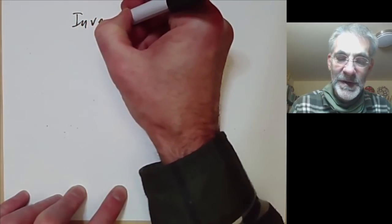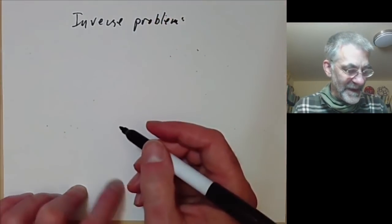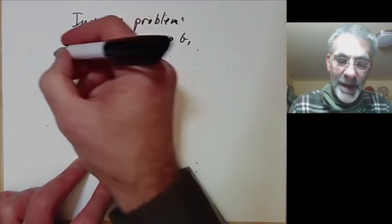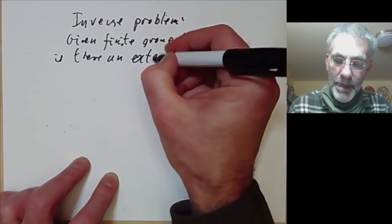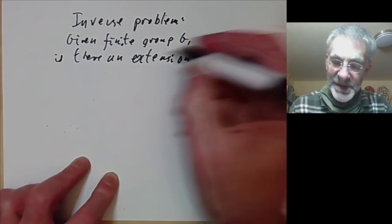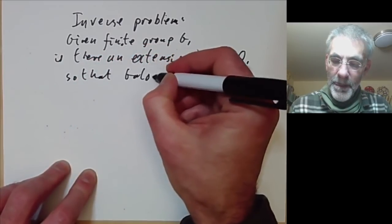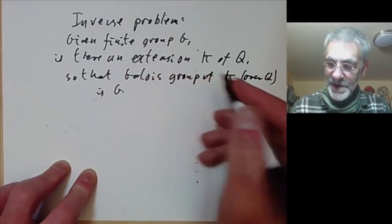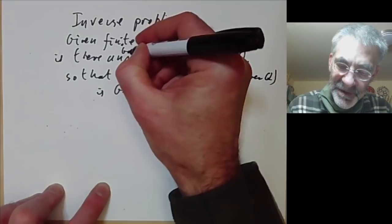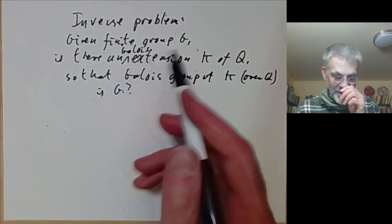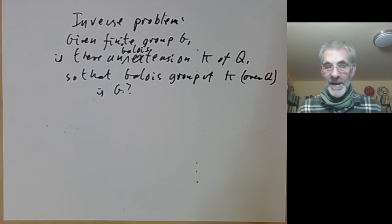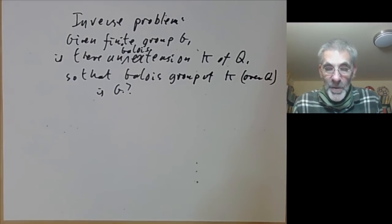I'll just finish by mentioning an old classical problem in Galois theory that still hasn't yet been solved. This is the so-called inverse problem. It's very easy to state. Given a finite group G, is there an extension k of the rational numbers so that the Galois group of k over Q is G. Here k has to be a Galois extension. This is known to be true for many groups. For instance, Shafarevich proved it for all solvable groups. Later in the course we will prove it for abelian groups. It's been proved for quite a lot of simple groups, but it's still a completely open problem in general.